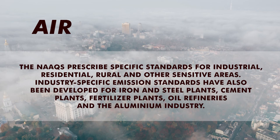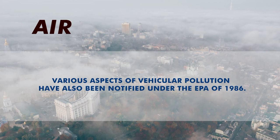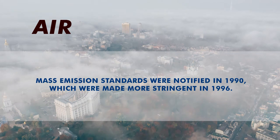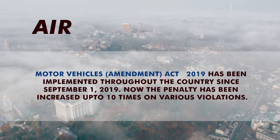NAAQS basically prescribes specific standards for industry, residential areas, rural and other sensitive areas. Industry-specific emission standards cover iron plants, steel plants, cement plants, fertilizer plants, oil refineries, and aluminum industries. One more act introduced to control radioactive waste was the Atomic Energy Act 1982. In 1988, the Motor Vehicle Act was enacted to regulate vehicular traffic, besides ensuring proper packaging, labeling, and transportation of hazardous waste. Mass emission standards were notified in 1990, strengthened in 1996, and revised again in 2000, with separate obligations for vehicle owners, manufacturers, and enforcing agencies. The Motor Vehicle Amendment Act 2019 has been implemented since September 1, 2019, with penalties increased up to 10 times on various violations including pollution.